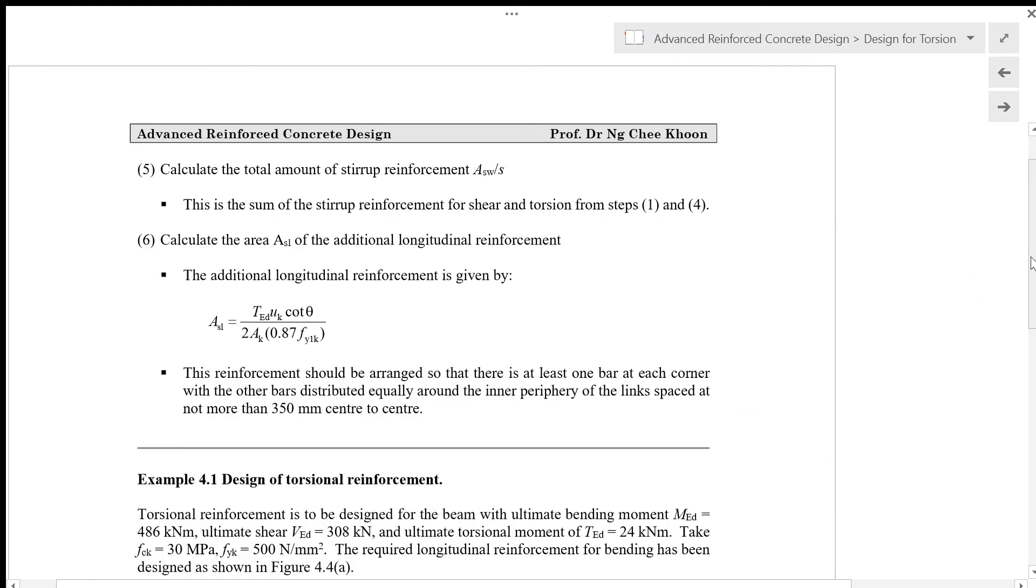The fifth step is to calculate the total amount of stirrup reinforcement ASW/S. This is the sum of the stirrup reinforcement for shear and torsion from steps one and four.